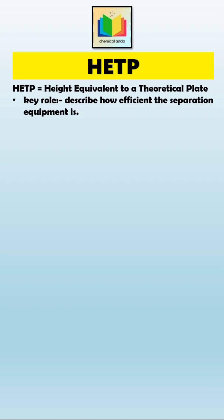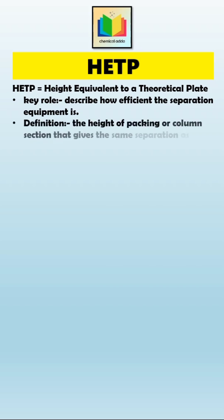Here's the definition. HETP is simply the height of packing or column section that gives the same separation as one theoretical plate in a plate column. To understand this, let's imagine a distillation column which is made of trays, where each tray acts like one theoretical plate.